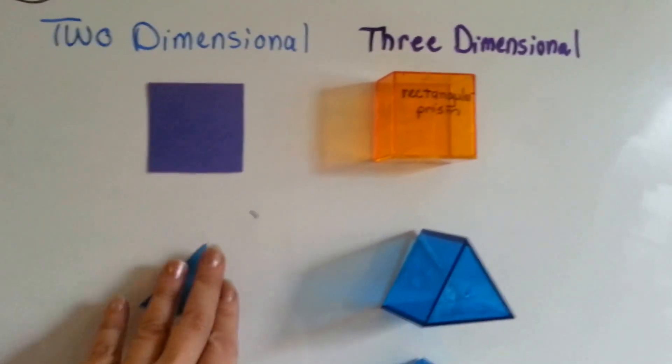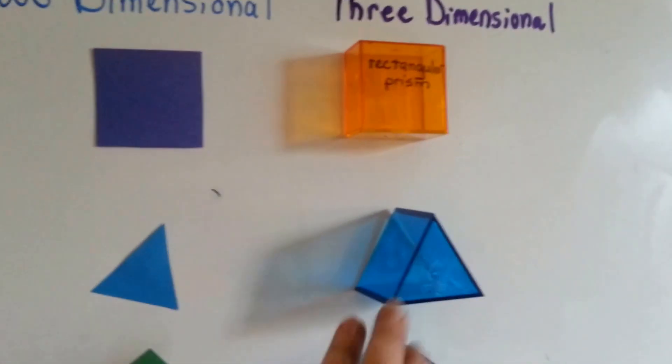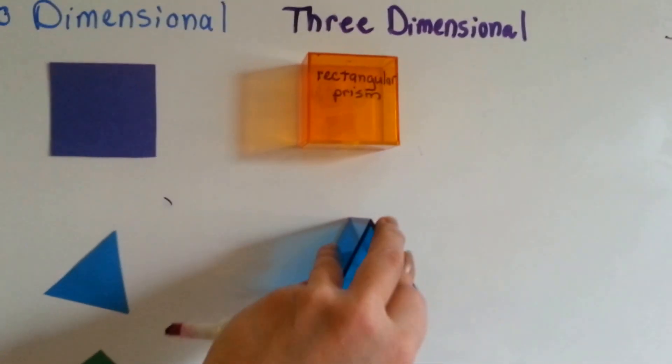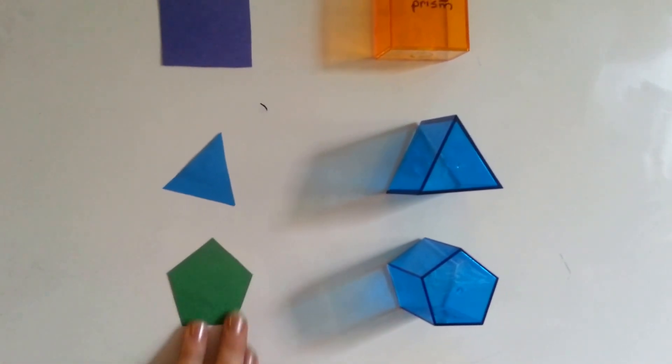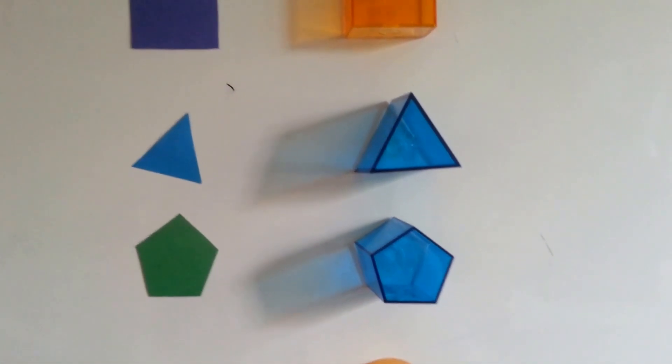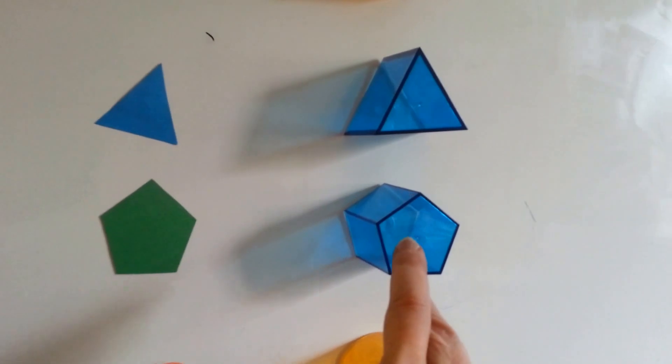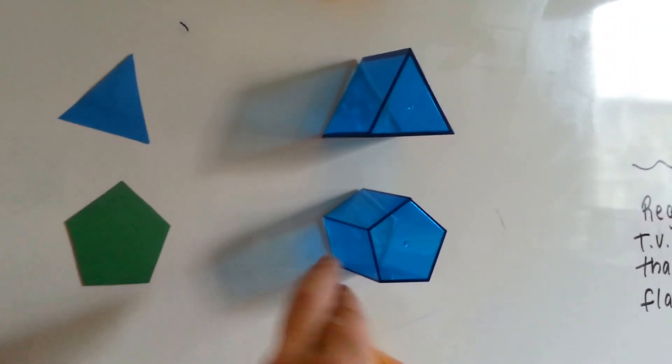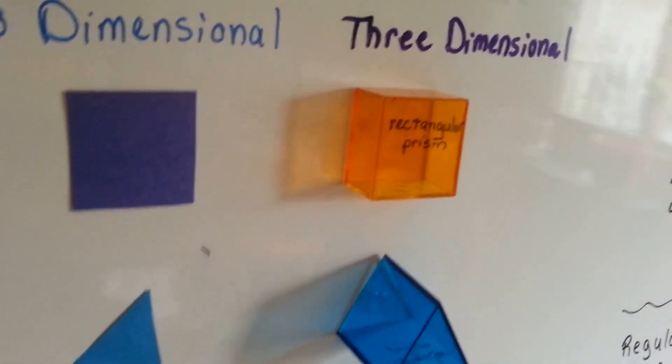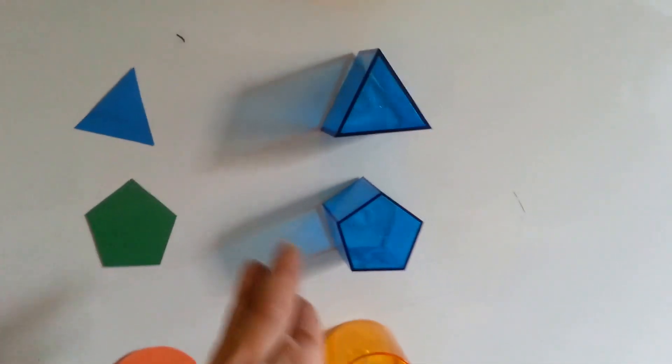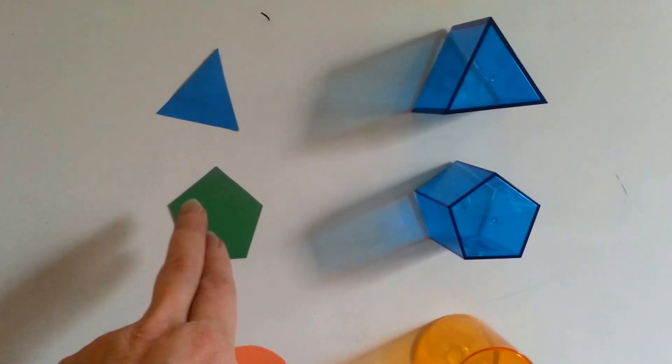We have a flat two-dimensional triangle, and we have a triangular prism that wants to come off my board. Hope it stays there. We have a flat pentagon on the board, two-dimensional. And we have a pentagon prism here that has height and is sticking out from the board. See how they stick away from the board? They even cast a shadow because of it, where these don't.